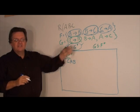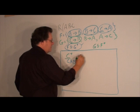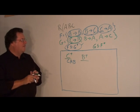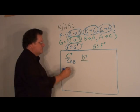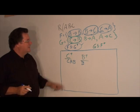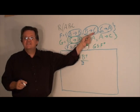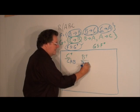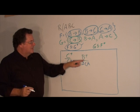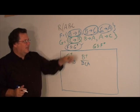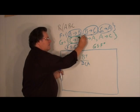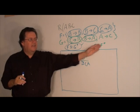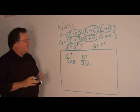We now take the next functional dependency and compute B closure with respect to F. It includes B by reflexivity, then B→C, and C→A, giving us B, C, A. B closure includes A, therefore the functional dependency B→A will be in F closure.